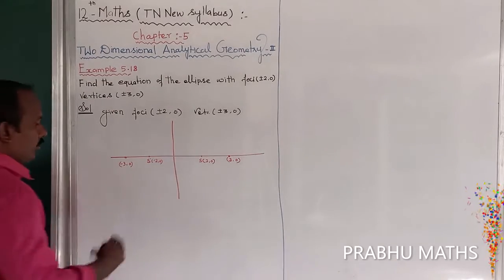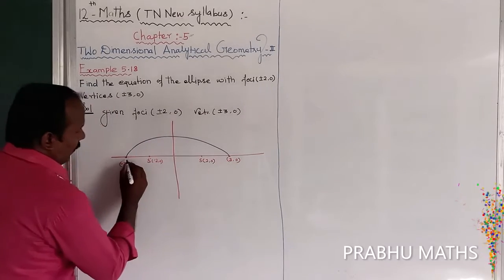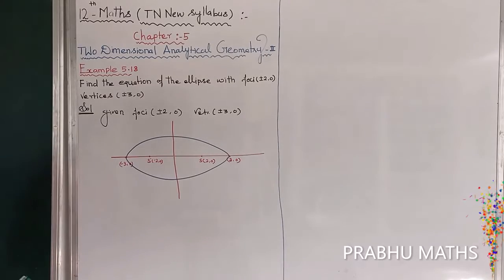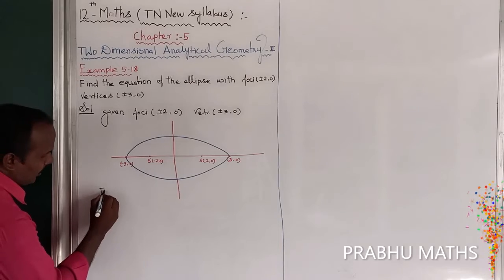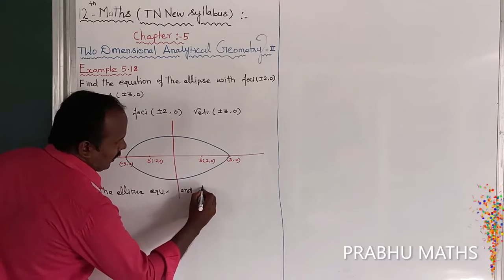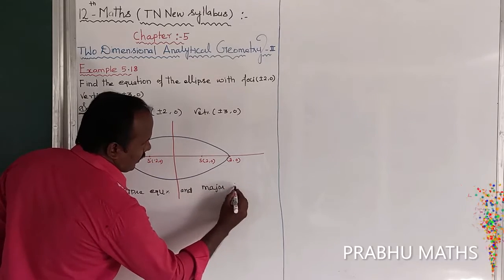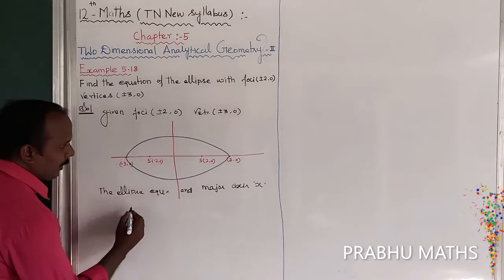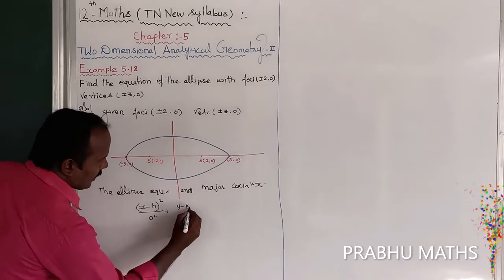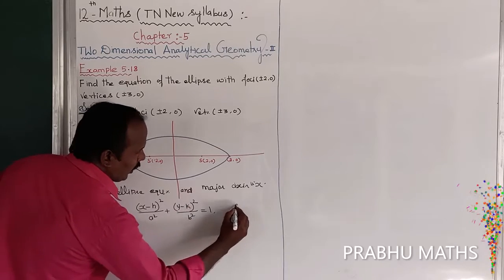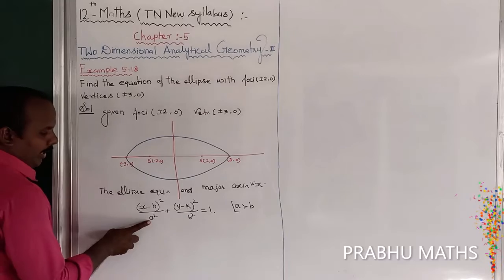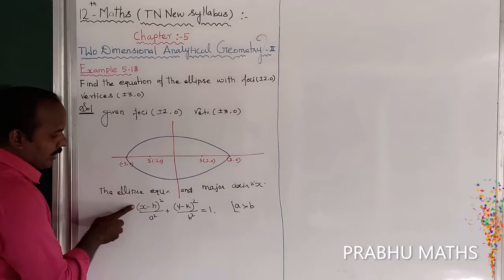The major axis is along the x-axis, so we use formation 1. The general form of the ellipse equation is: (x − h)² / a² + (y − k)² / b² = 1, where a is greater than b. The highest denominator corresponds to the x-axis, which is called the major axis.